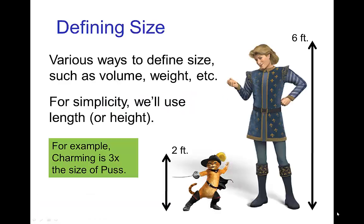Timing and Scale. To start out, let's define how we're going to describe size. There are a few choices like volume and weight, but we'll use the simplest definition: length or height. In this example, Puss is two feet tall and Prince Charming is six feet tall, so we would say that Prince Charming is three times the size of Puss.